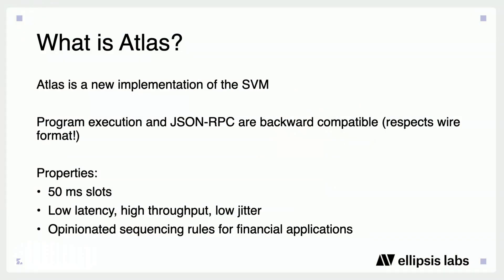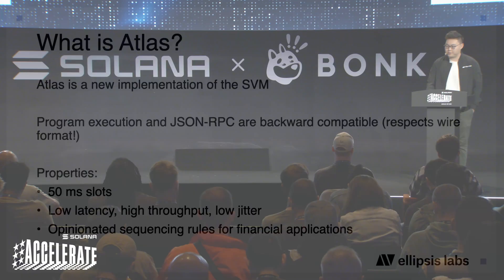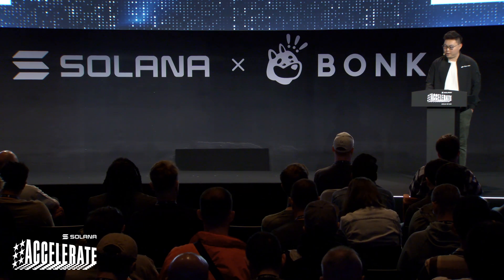Atlas is a blockchain for verifiable finance. Verifiable finance combines the performance of digital finance with the transparency of DeFi. Under the hood, it uses a new implementation of the Solana virtual machine. The key reason for this is to keep the execution environment mostly backwards compatible with Solana mainnet, and the easiest way to do this is to respect the same application-specific interfaces or wire format that Solana uses.